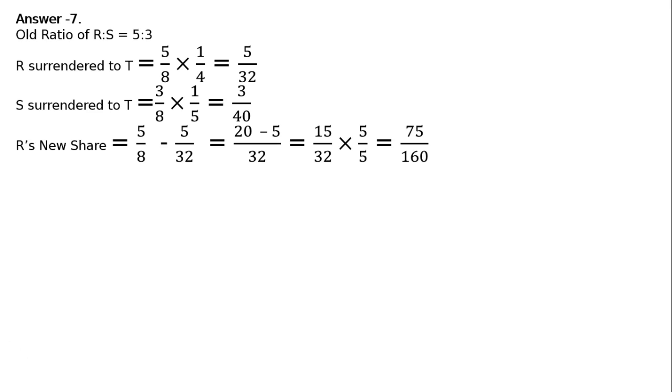That is equal to 15 upon 32. Here, to make the denominator equal, we have to multiply with 5 upon 5 to make the denominator 160. That is 15, 5, 75 upon 32, 5, 160.